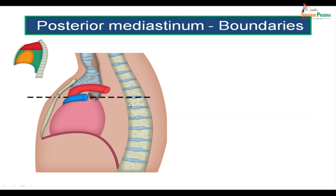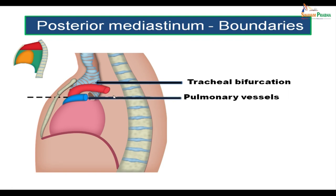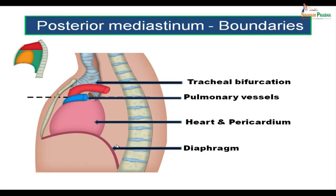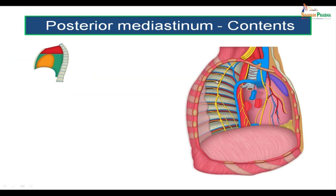The posterior mediastinum is bounded anteriorly by the bifurcation of the trachea, pulmonary vessels, the sloping heart and pericardium, and the posterior surface of the diaphragm. From above downwards: tracheal bifurcation, pulmonary vessels, posterior surface of the heart and pericardium, and posterior sloping surface of the diaphragm. Posteriorly it is bounded by T5 to T12 thoracic vertebrae with intervertebral discs, and on either side by the mediastinal pleura.